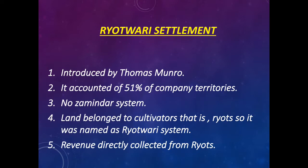Ryotwari Settlement was introduced by Thomas Munro and was further extended to the Bombay Presidency and Assam. In South India, there were no traditional zamindars and the land actually belonged to the cultivators, that is, the ryots. Both Munro and Reid felt that land settlements must be made directly with the ryots. Thus, the system came to be known as the Ryotwari Settlement. The land revenue was not collected by the zamindar or lambardar but was taken from the ryots or cultivators directly, and they deposited it in the government treasury.